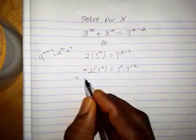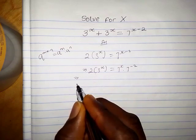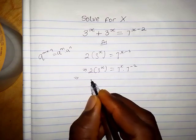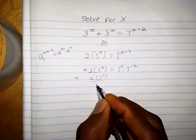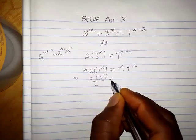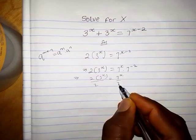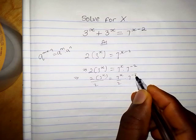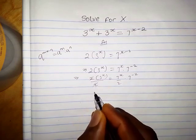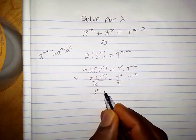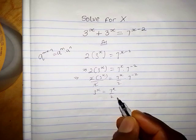Now let's divide both sides of this equation by 2. We have 2 into 3 raised to the power x over 2, equals 7 raised to the power x over 2 times 7 raised to the power minus 2. The 2s cancel, so we have 3 raised to the power x equals 7 raised to the power x over 2 times 7 raised to the power minus 2.